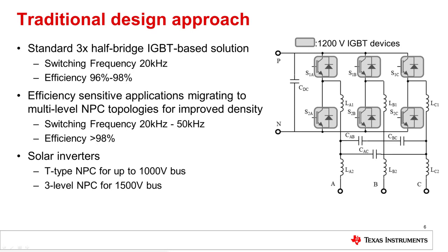Multi-level topologies reduce the switched voltage to enable higher switching frequencies and smaller magnetics. For example, the typical topology seen in the solar string inverter industry today is the T-type NPC converter for buses up to 1,000 volts and three-level NPC converters for buses up to 1,500 volts.